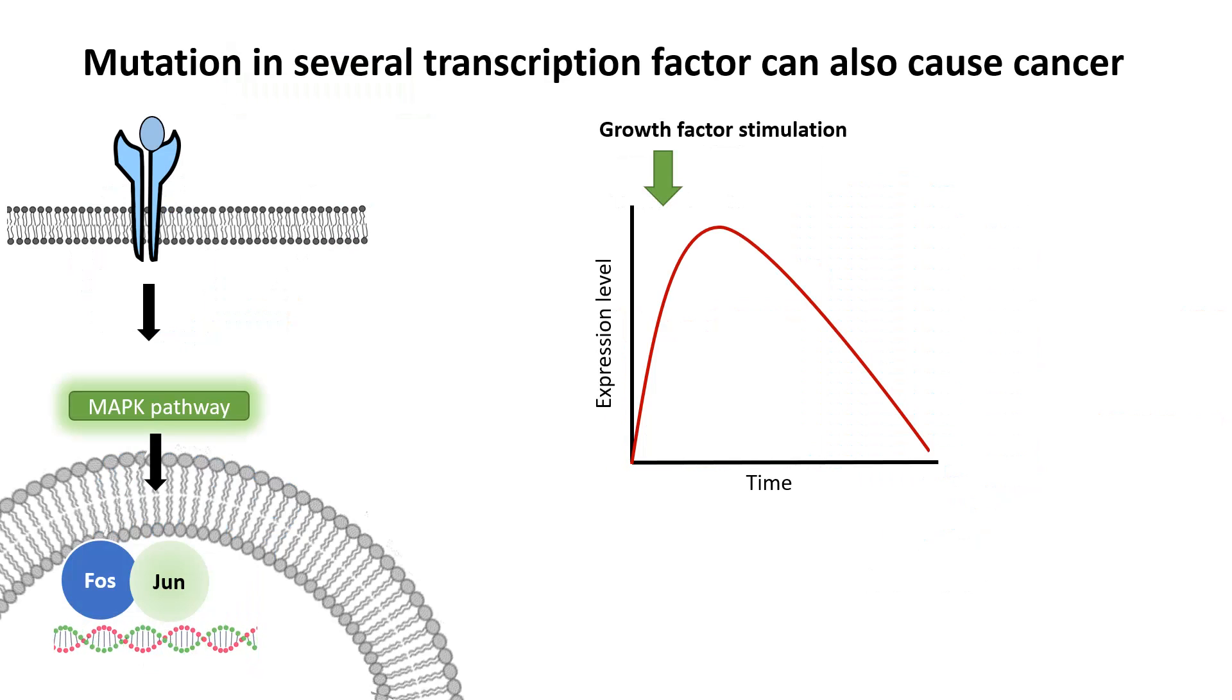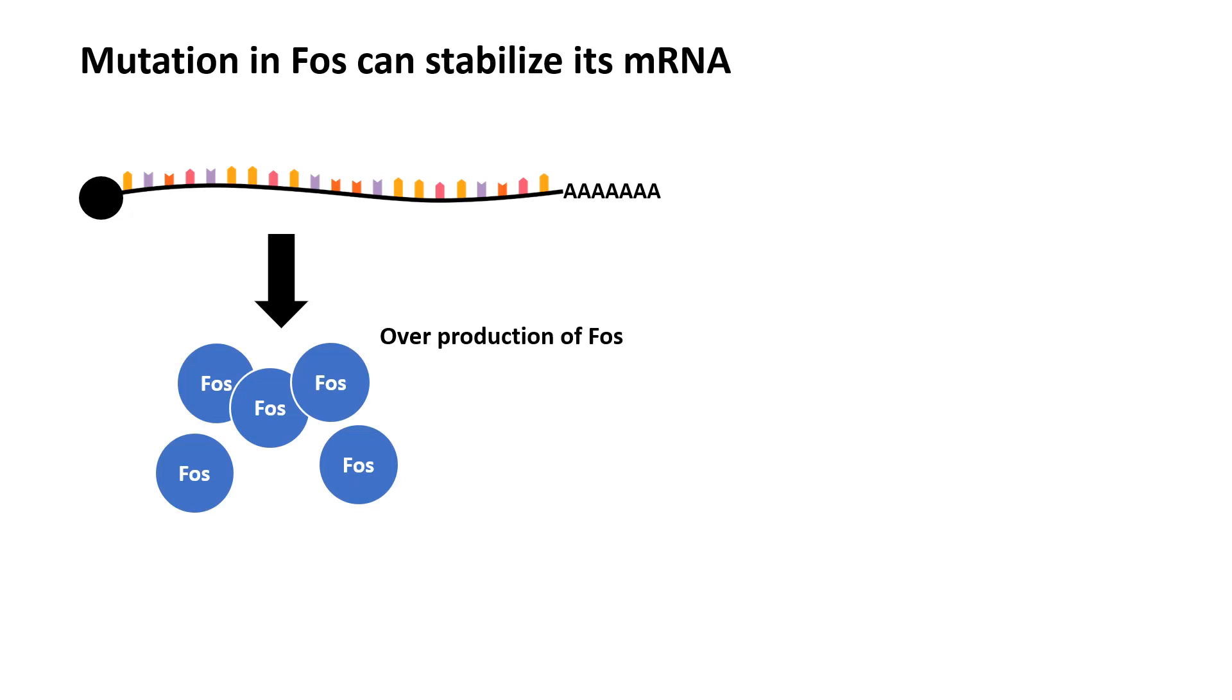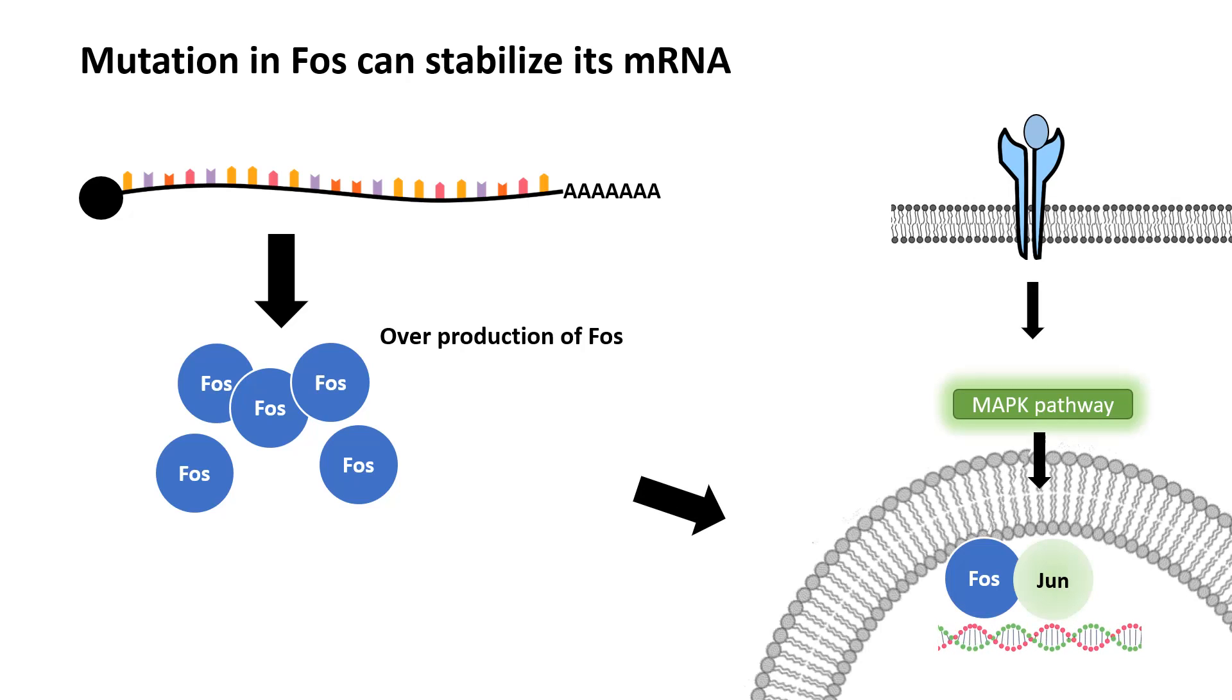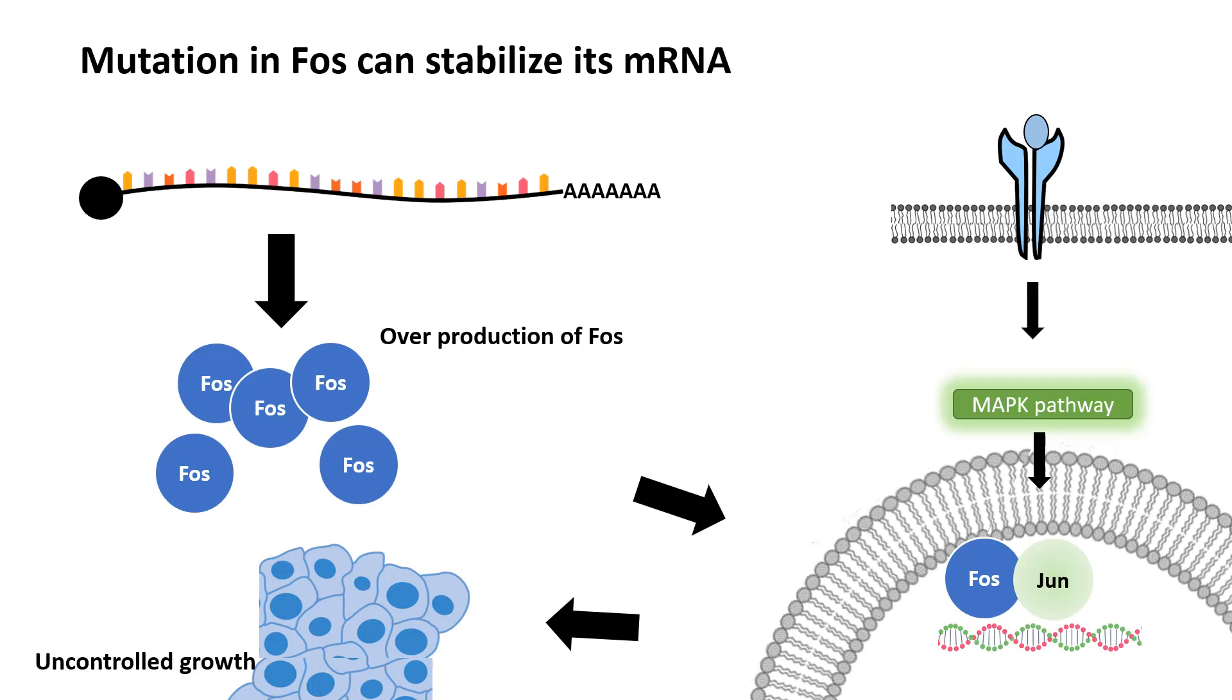Now mutation in several transcription factors can also lead to cancer, and a live example is FOS. Another thing is, in many cases, mutations might stabilize the mRNA. Namely, the FOS mRNA is normally degraded at a steady-state rate, but the overproduction of the FOS would happen or the stabilization of this FOS could happen due to some mutation in its mRNA. As a result, the output of the MAP kinase pathway would be huge. As a result, there could be uncontrolled growth and risk of cancer.